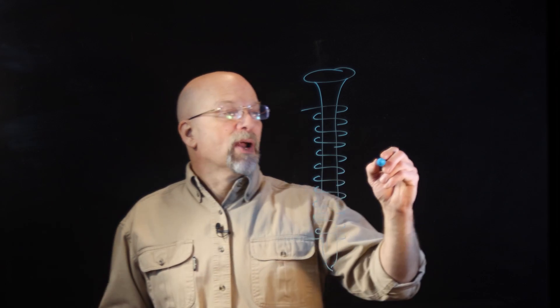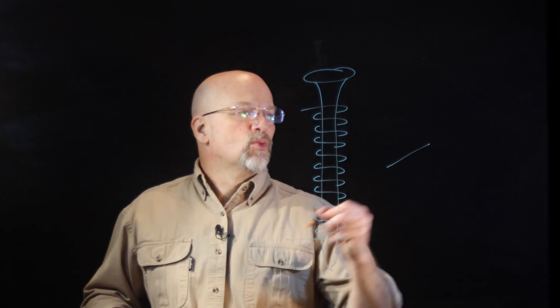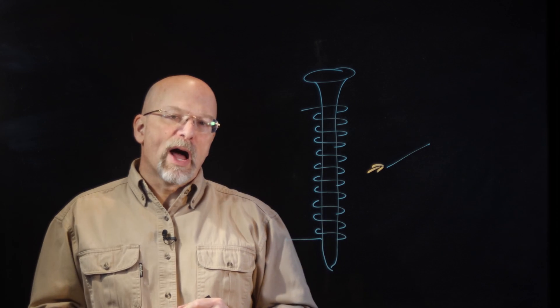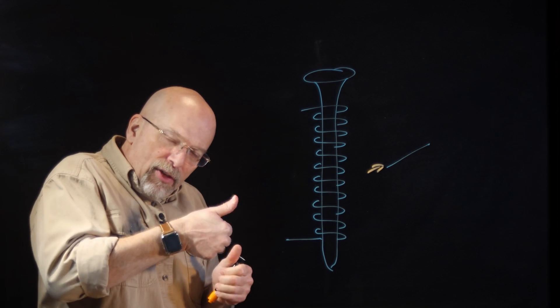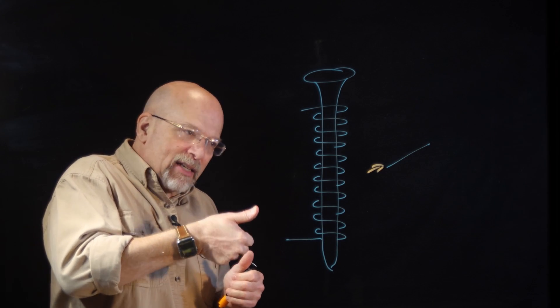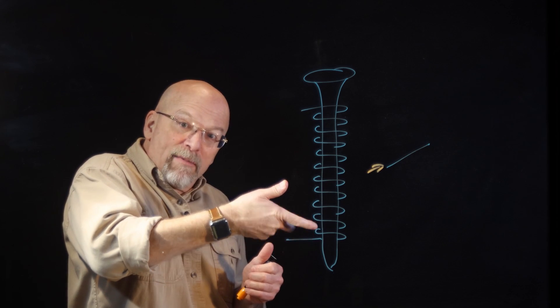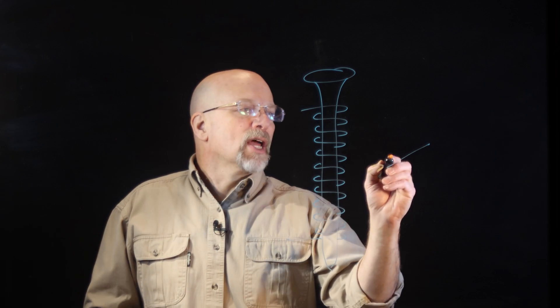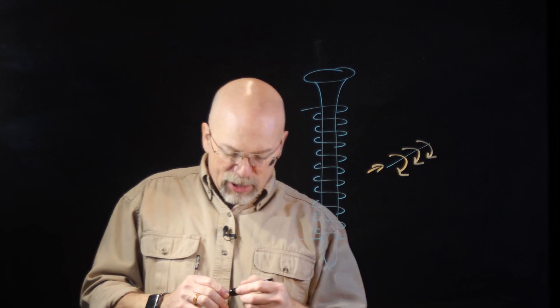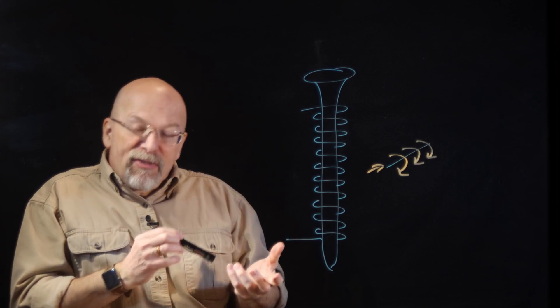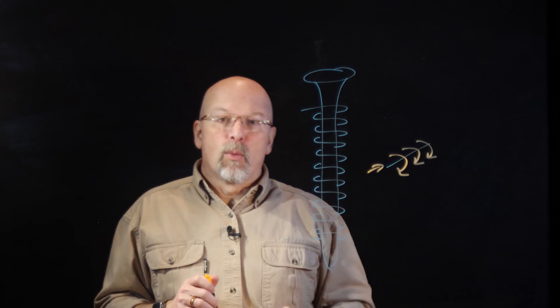If you take a wire and you run current through that wire, if you take the thumb of your right hand and you point it in the direction that current is flowing in that wire, your fingers are going to show you the direction in which a magnetic field is being generated in that wire.